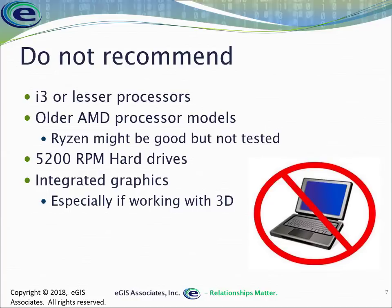The new AMD Ryzen processors could potentially work well — I say potentially because we haven't had the opportunity to really test them yet, but the architecture looks like it would support ArcGIS Pro pretty well, so it might be an option to consider. Also avoid slower 5,400 RPM hard disks — the transfer rate is just too slow. Will it work? Yes, but it's going to be slow and dragging. So 7,200 RPM or better, or solid-state drives, are really the preferred choice. And definitely avoid integrated graphics — get a dedicated video card. It's worth the money.